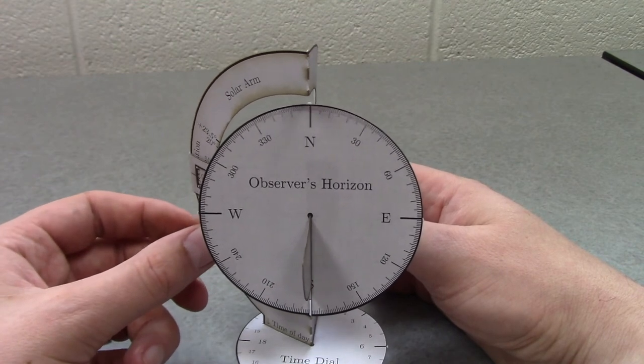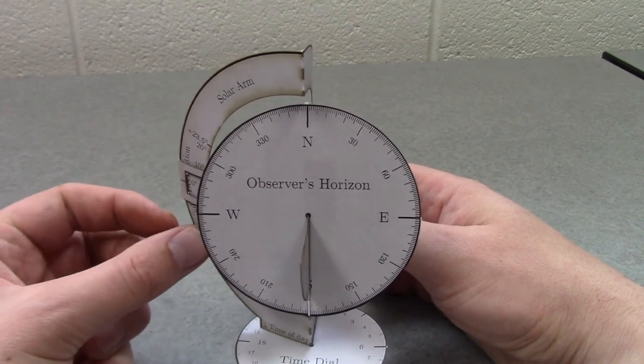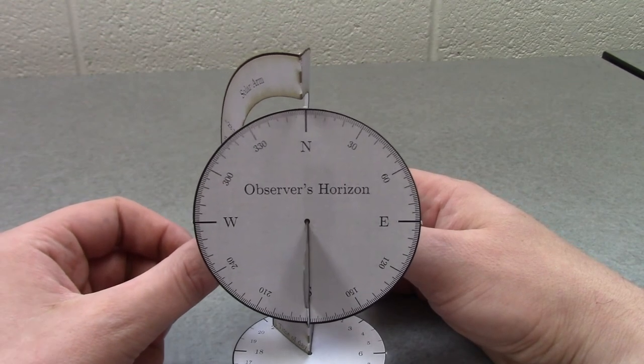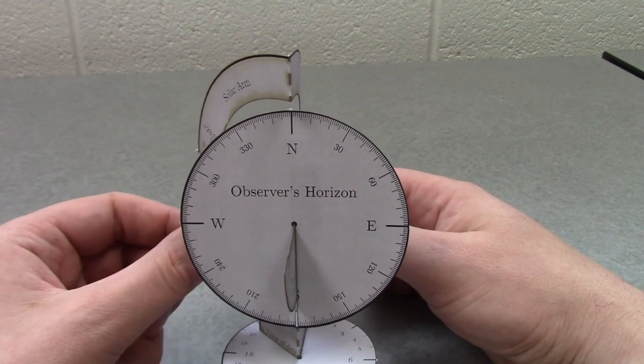Then after 6 p.m., after sunset, the sun continues moving in its orbit around this disk, but it's behind the horizon. This represents the sun not being visible to us anymore.